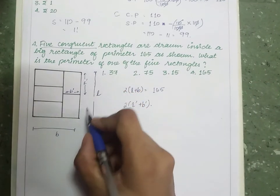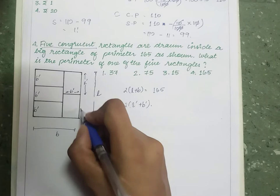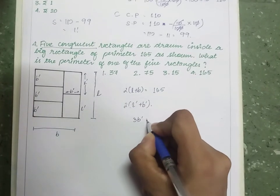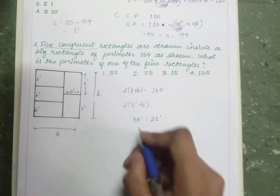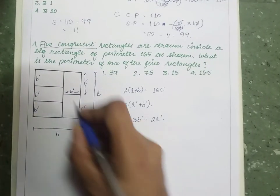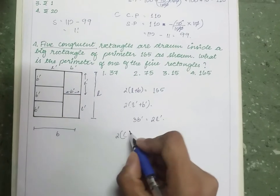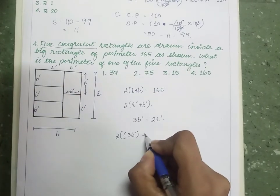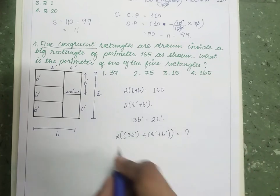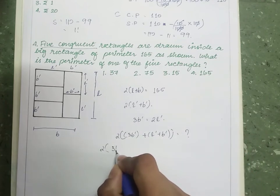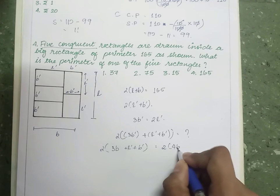From the figure, the big rectangle's breadth equals 3b' and its length equals l' + b', giving the relationship 3b' = 2l' (wait — actually L = 3b' and B = l' + b', so 2(L + B) = 2(3b' + l' + b') = 165). The perimeter of one small rectangle is 2(l' + b'), which we can express using the relationship 3b' = 2l', i.e., l' = 3b'/2.